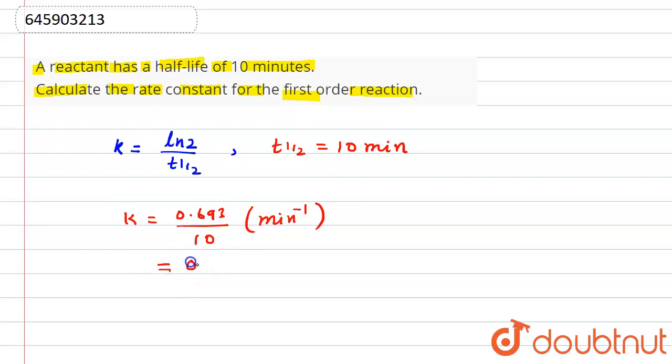So after putting this value and dividing, it will be 0.0693 per minute. And if you want to find it in seconds, then we have to divide by 60 as well to convert this into seconds.